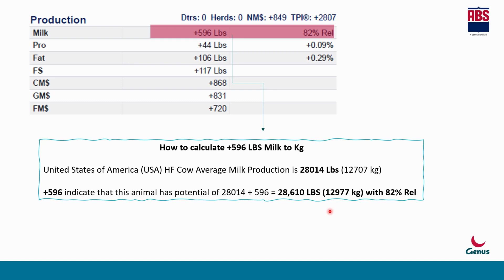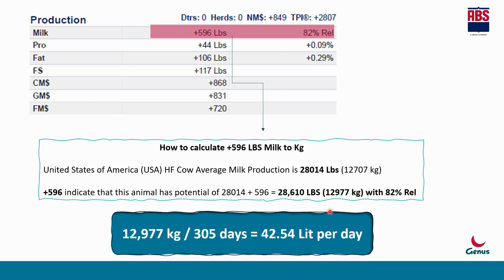Now the question is: if it is 12,977 kilogram for 305 days, what is the per-day production? The per-day calculation is simply 12,977 divided by 305 days, because that is the lactation period. So it is approximately 42.5 liters per day. This is the potential of the Hammer bull, with 82% reliability.